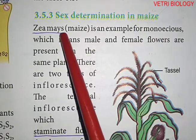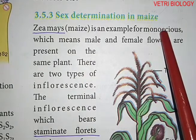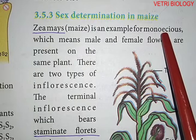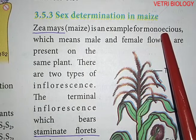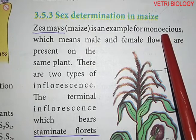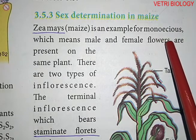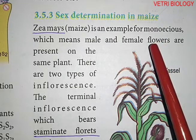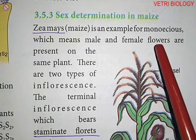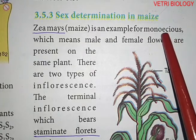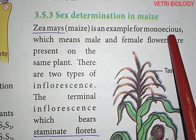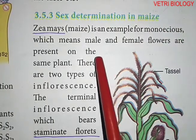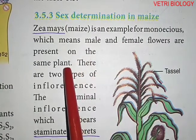The botanical name of maize is Zea mays. It is monoecious, that is, male and female flowers are present in the same plant. Like coconut, both male and female flowers are present in the same plant.